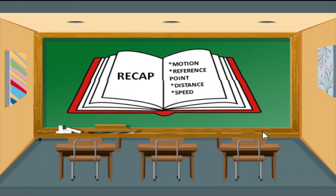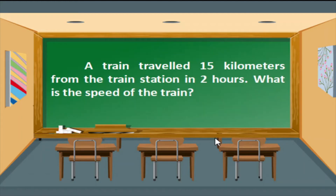Speed is the measure of how fast or slow an object is moving. Now, I want you to answer this activity using a piece of paper. A train traveled 15 kilometers from the train station in two hours. What is the speed of the train?